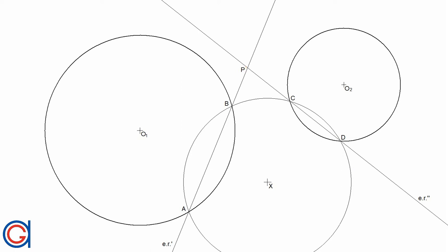We are going to use this power center to locate the radical center between the given exterior circles. So now we are going to join centers o1 and o2.